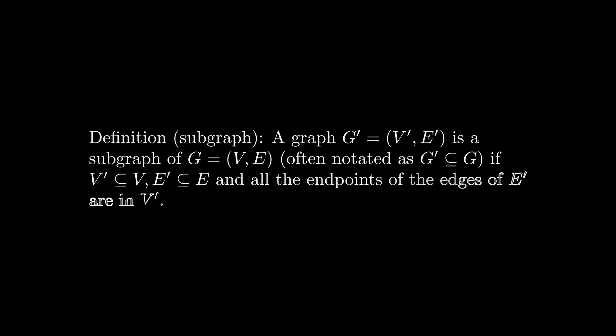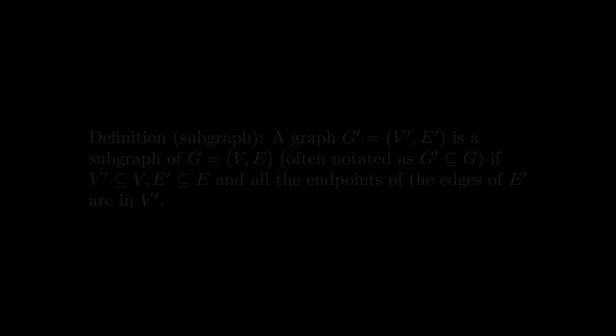A subgraph G' of a graph G refers to a graph G' = (V', E'), where V' is a subset of the original set of vertices V, and E' is a subset of the edges between the vertices in V' in the original graph. Showing this graphically, here's an example of a subgraph of the following graph.